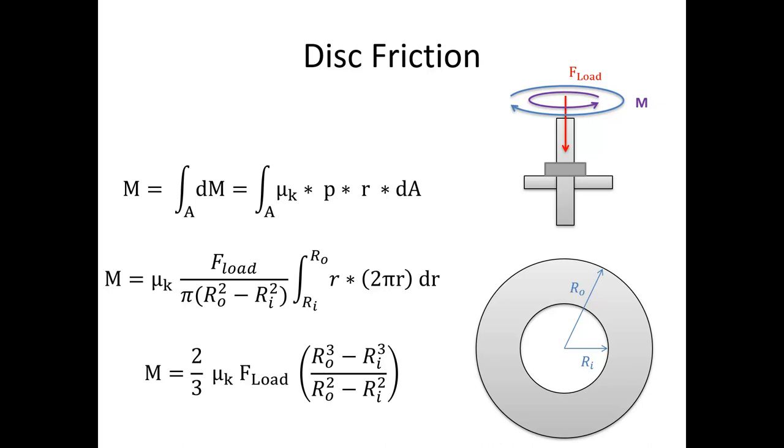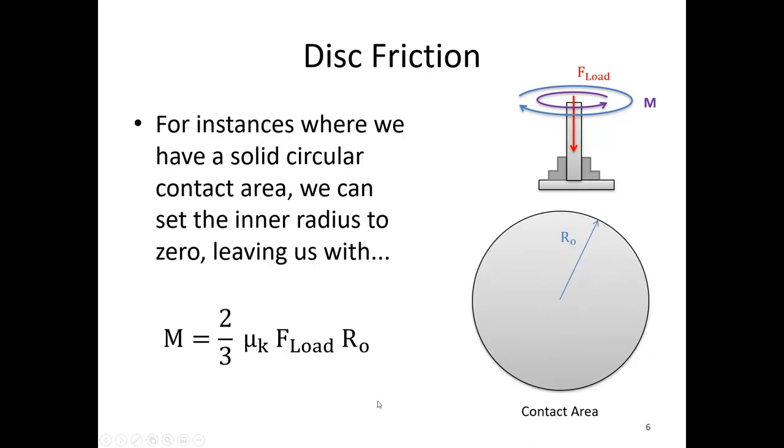We're going to wind up with the following formula. All this stuff up top is derivation. This is the formula that we're actually going to need. The moment due to friction is 2/3 times μk times the load force times (router³ - rinner³)/(router² - rinner²).